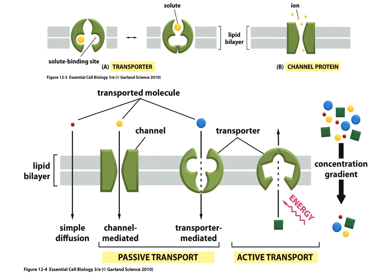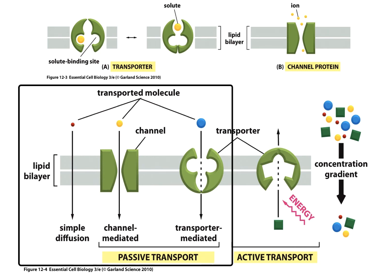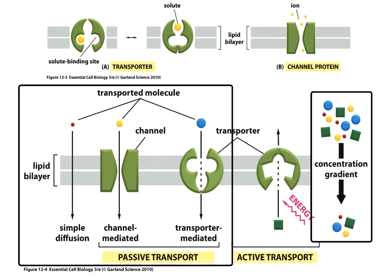Regarding moving through proteins in the membrane: there are transporters that change their shape to allow the movement of a solute or ion — that's called a transporter. There are also channel proteins that have a gap and allow movement of a particular ion or solute through that pore. There are two types of transport: passive transport, which simply allows a molecule to pass through based on a concentration gradient — a higher concentration on one side and lower on the other — with free movement when that pore is opened.